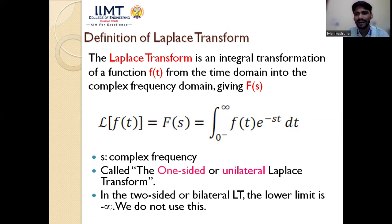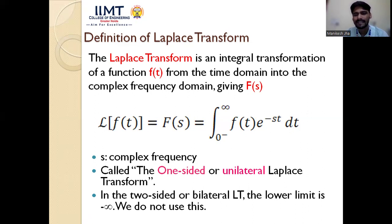When we define functions in the time domain, we represent them as f(t) — a function of time. When we define a function in the complex frequency domain, we represent it as F(s), where s is the complex frequency given as σ + jω, where σ is the attenuation factor and ω is the angular frequency.